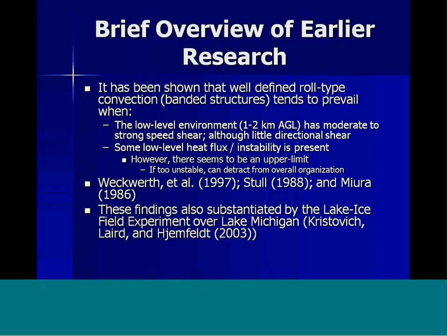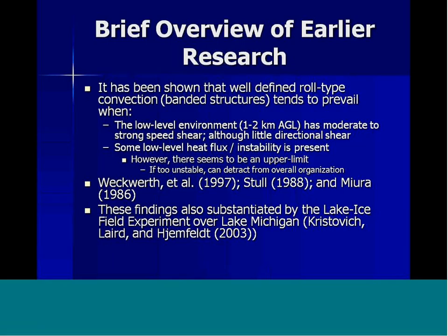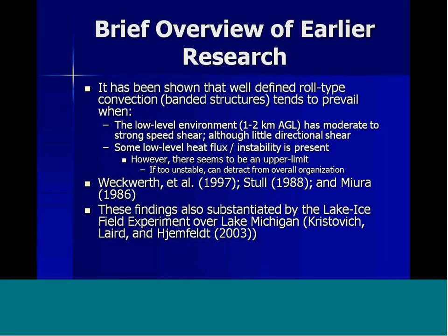This is a brief overview of some earlier research from the late 80s and 90s. The upshot was that for roll convection, which lake effect snow typically is, the prevailing conditions are fairly strong low-level flow with a strong speed shear with height in the lowest 2 kilometers. You need some measure of low-level heat flux or instability to get these bands to form.